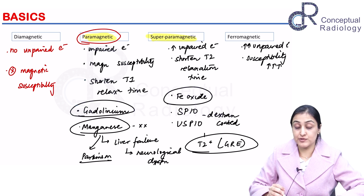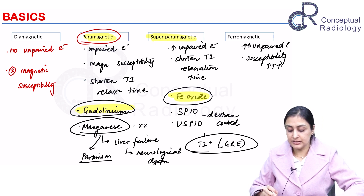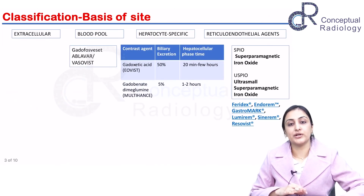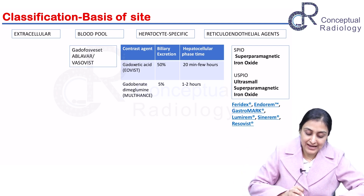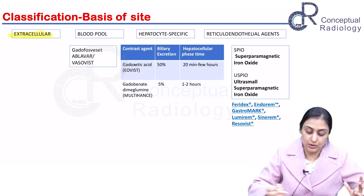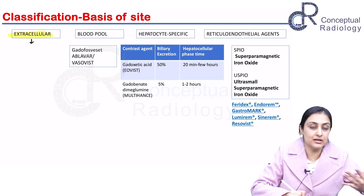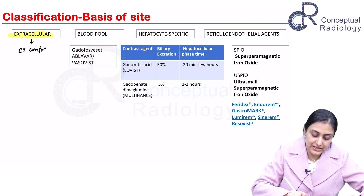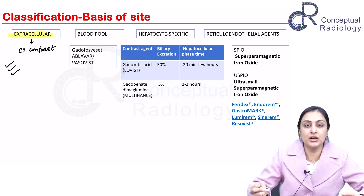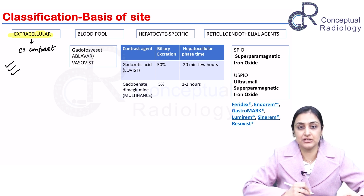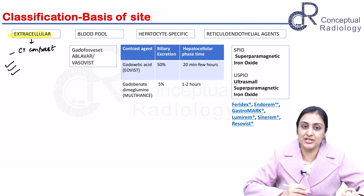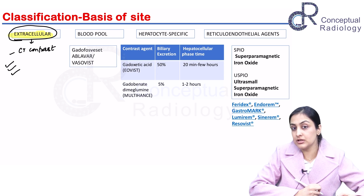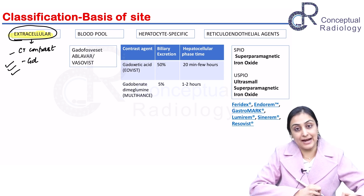Now let us go into the types of contrast based on the site of action. Extracellular agents behave just like CT contrast agents — they have arterial phase, venous phase, and then distribute into the interstitium. All contrast agents, unless mentioned otherwise — including CT contrast and gadolinium — are extracellular contrast agents.